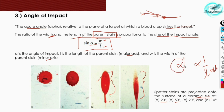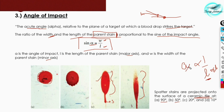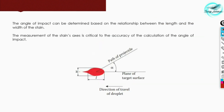The angle of impact is inversely proportional to the length of the stain and the width of the stain, according to the formula stated earlier. The measurement of the stain's axes is critical to the accuracy of the calculation of the angle of impact. Length is usually calculated on the major axis and width is usually calculated on the minor axis.